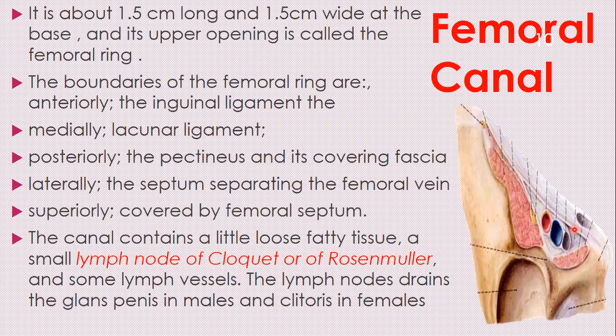The femoral canal also contains a small lymph node called the lymph node of Cloquet, or the Rosenmüller lymph node, which acts like a secretory gland — also called the gland of Cloquet in some textbooks. This lymph node drains lymph from the genital areas: the penis, the clitoris, all drain into this lymph node.